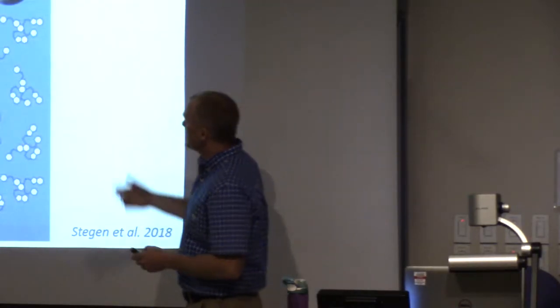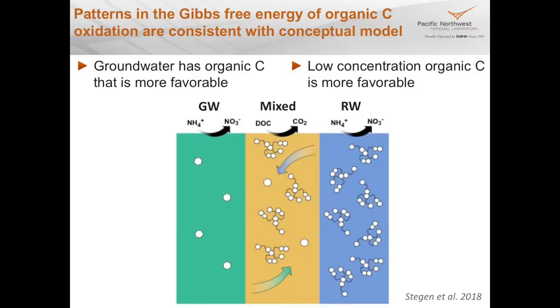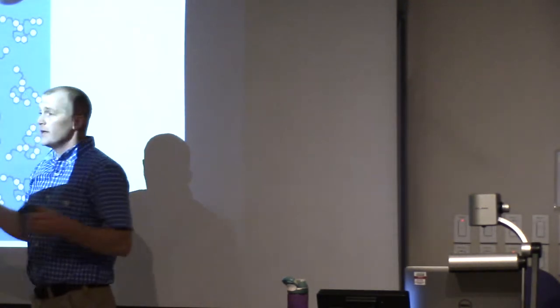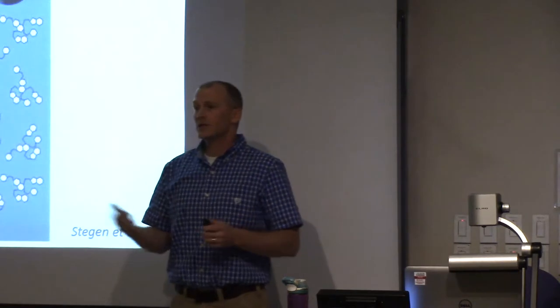The conceptual interpretation: groundwater has very little but favorable carbon — respiration is limited by carbon quantity. Surface water has plenty of carbon but microbes can't access it because it's not favorable. When you mix the two, you break both limitations simultaneously: relative to groundwater you increase concentration; relative to river water you increase favorability. That combination drives the stimulated activity we observe.